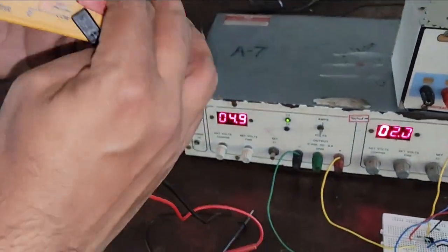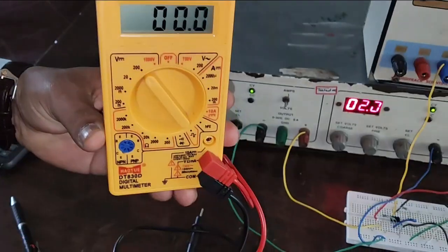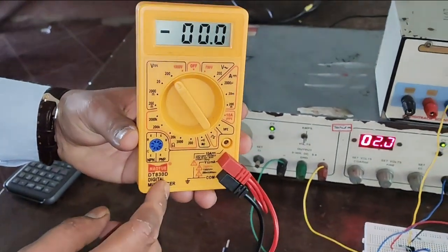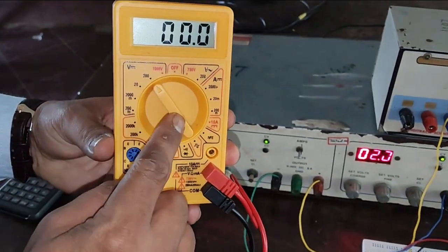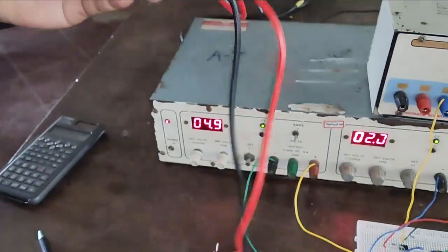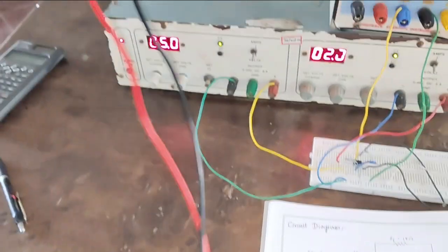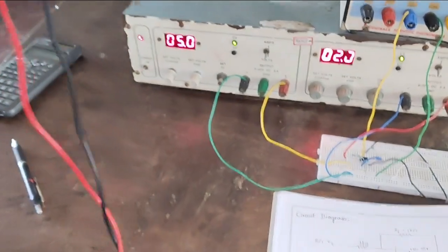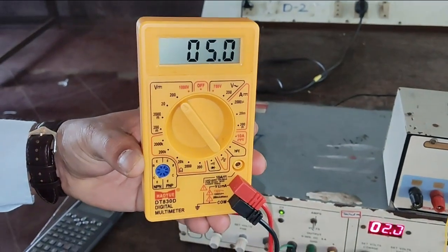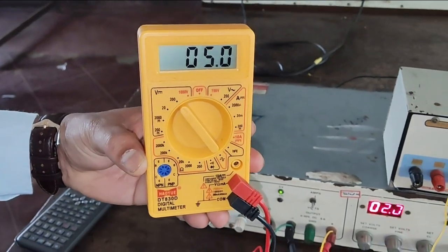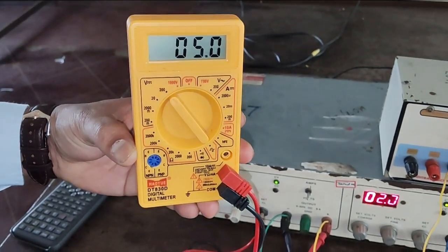First of all let's check this voltage with the help of DC multimeter. Set the DC voltage range as 200. Now I will check the voltage of the V2 power supply. It is showing 5 volts.